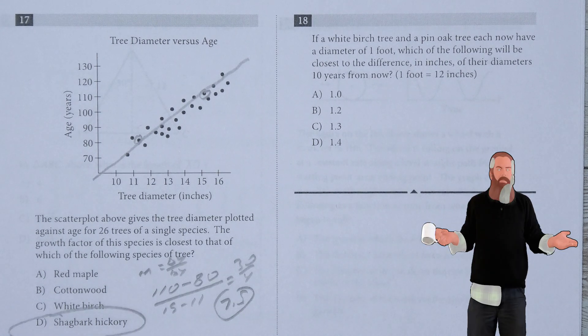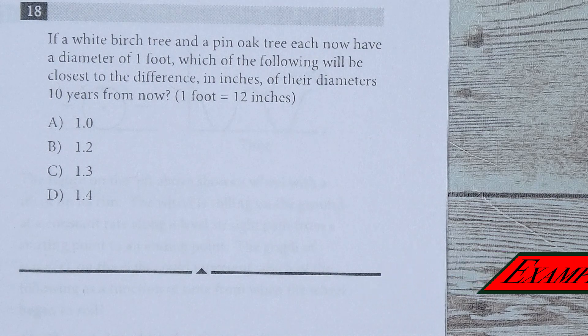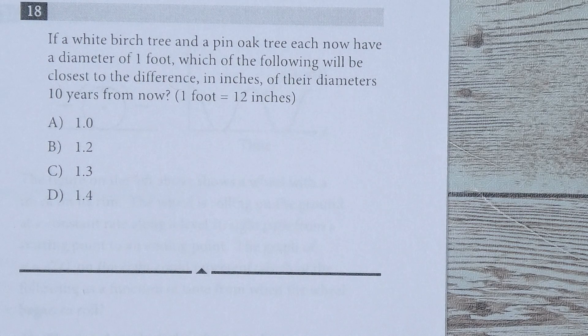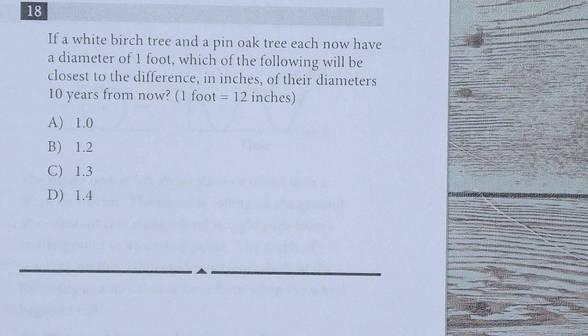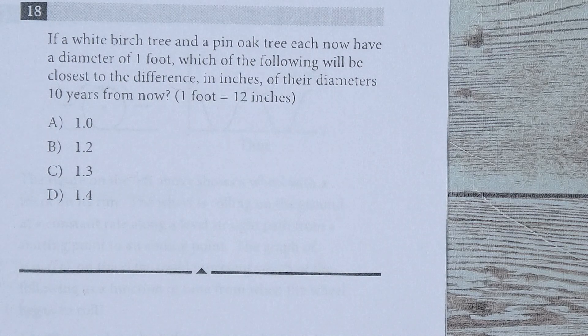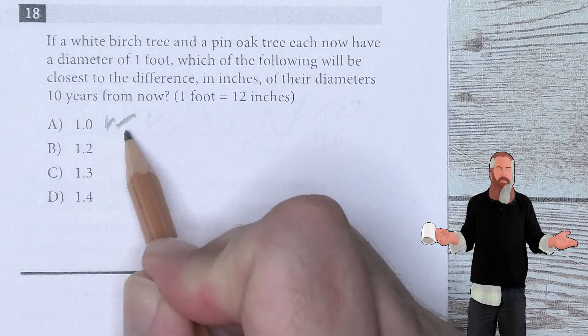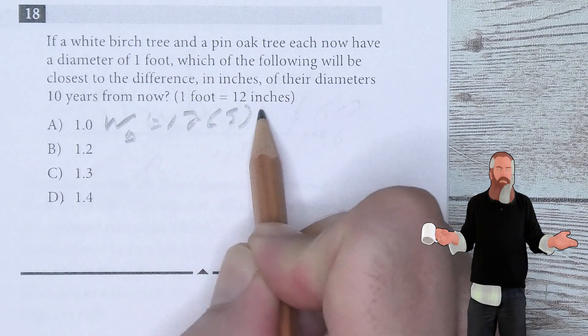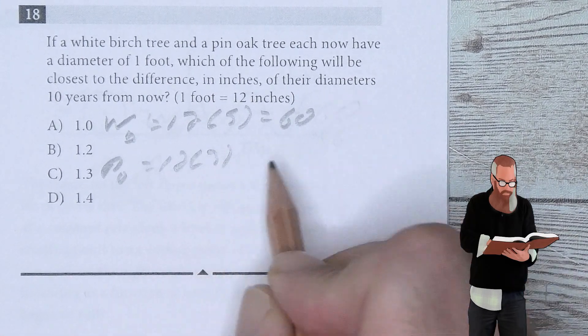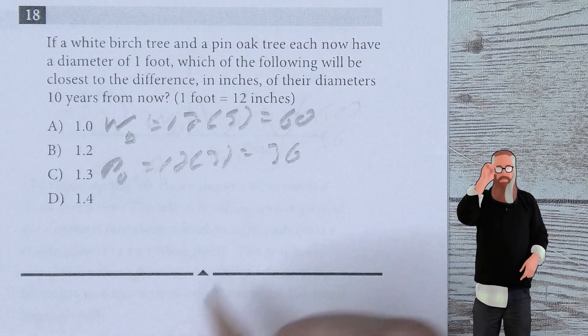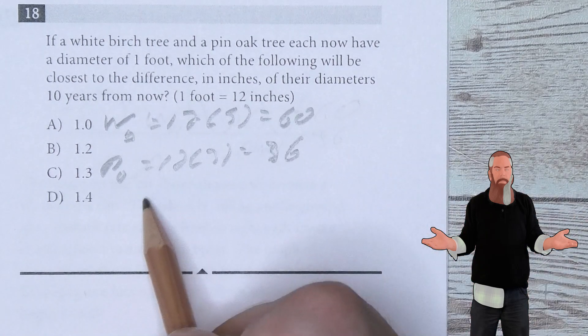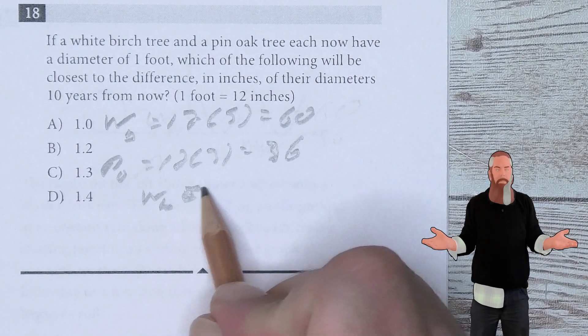If a white birch tree and a pin oak tree each now have a diameter of one foot, which will be closest to the difference in inches of their diameter 10 years from now? One foot equals 12 inches. The white birch at 12 times 5 is 60 years old. The pin oak, 12 times 3 gives us 36 years old. This is what's needed so we can say in 10 years, how would it be?